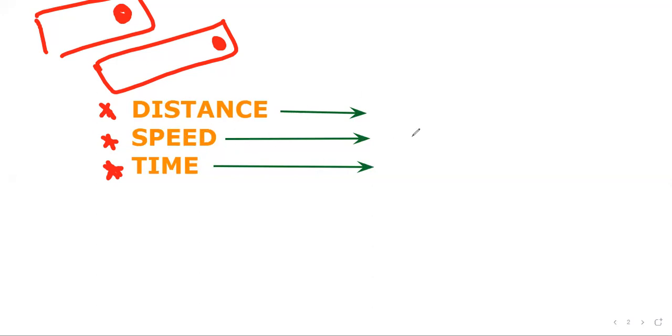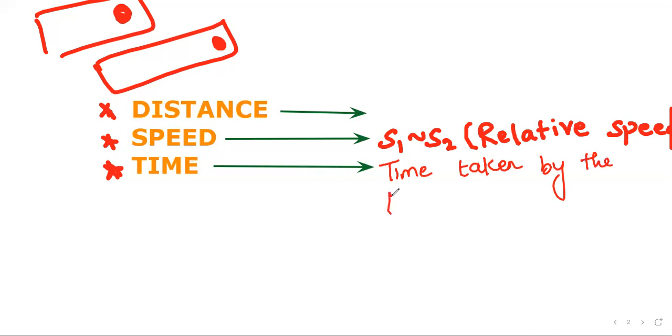So talking about the speed, the speed is going to be the difference in between the speed of two trains. So basically, we will not call it as speed, we will call it as relative speed. And the time is nothing but the time taken by the trains to cross each other.